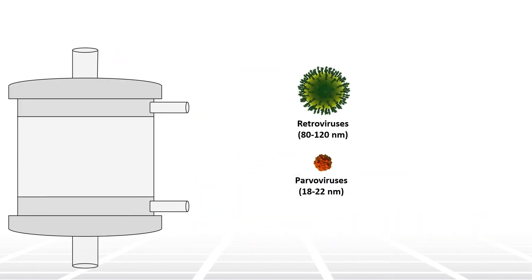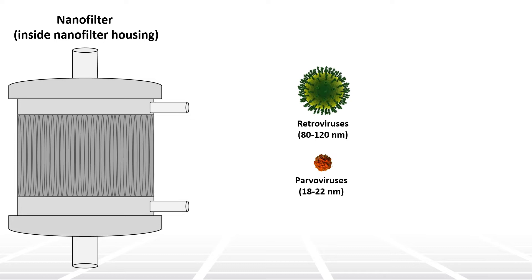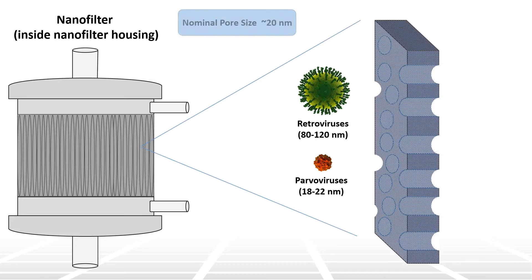Due to the size of viruses, the use of a 20 nanometer pore-sized nano filter has become industry practice, as nano filters offer consistently high passage of the protein of interest, making them ideal for bioprocessing.